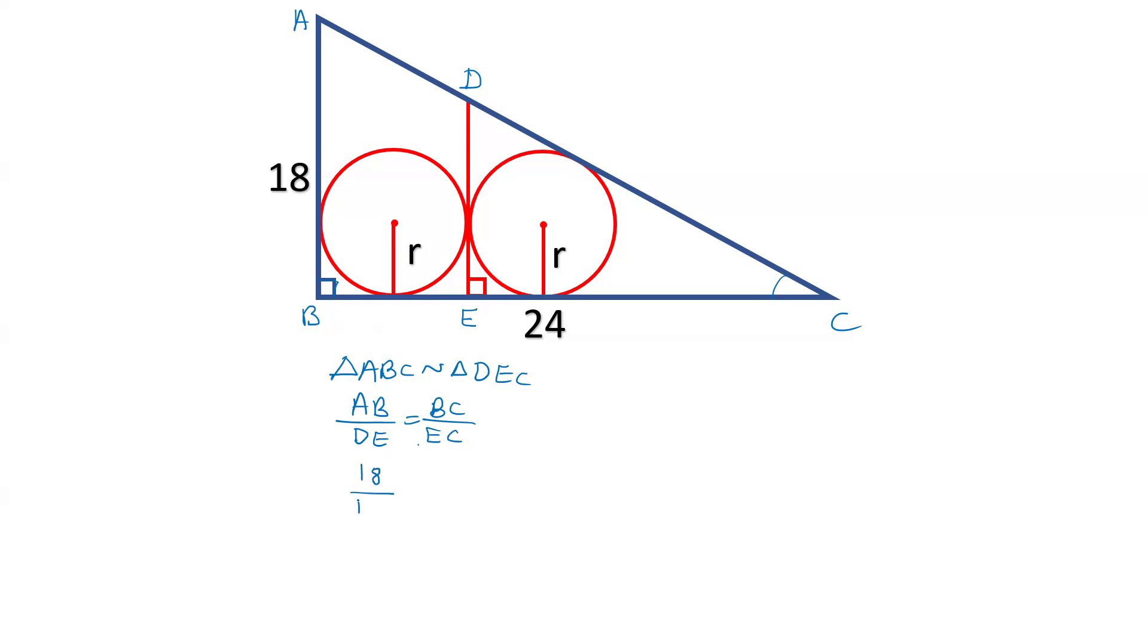So, AB is 18, BC is 24. We can write 18 upon 24 equals DE upon EC. If we cancel this out, this will be 3 to 4. So the sides DE and EC are in the ratio of 3 to 4, because these two sides are 3 to 4, and therefore these two sides are also 3 to 4.